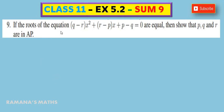If the roots of the equation (q - r)x² + (r - p)x + (p - q) = 0 are equal, then show that p, q, r are in AP. If the roots of the equation are equal, the roots are real and equal.